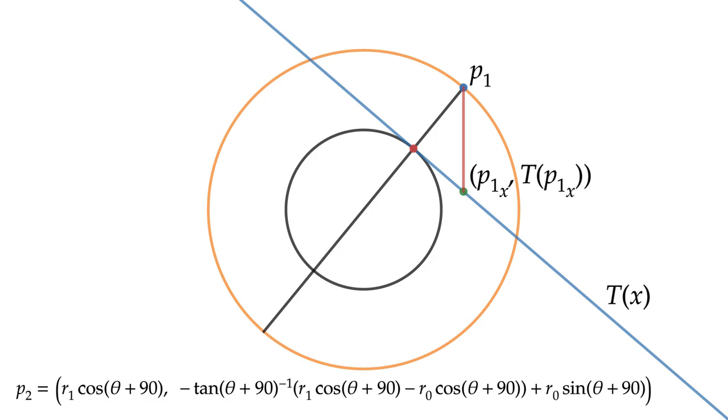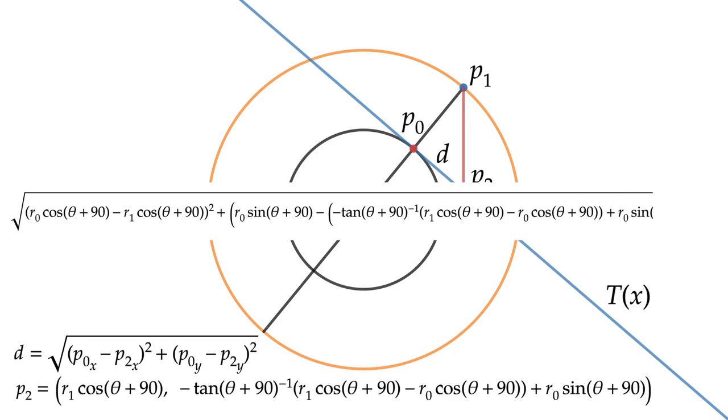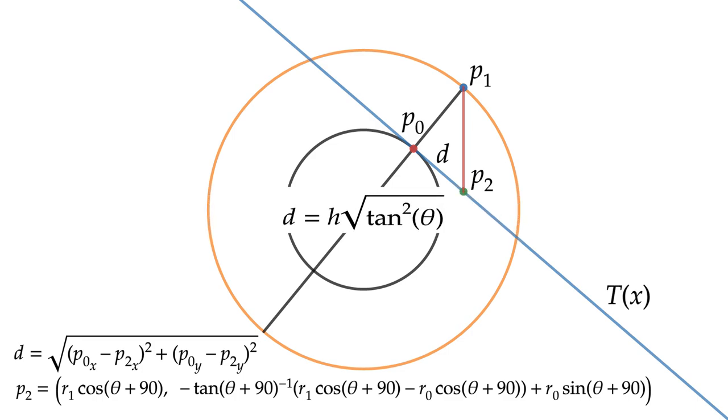Solving for P1 x gives us P2 equals R1 cosine theta plus 90, T of R1 cosine theta plus 90. Expanding T of x, P2 equals R1 cosine theta plus 90, negative tan theta plus R1 cosine theta plus 90 to the negative 1 times R1 cosine theta plus 90 minus R0 cosine theta plus 90 plus R0 sine theta plus 90. To then find the distance of the shadow D, we need to find the distance between P0 and P2. D equals square root P0 x minus P2 x squared plus P0 y minus P2 y squared. Substituting for P0 and P2 gives us square root R0 cosine theta plus 90 minus R1 cosine theta plus 90 squared plus R0 sine theta plus 90 minus negative tan theta plus 90 to the negative 1 times R1 cosine theta plus 90 minus R0 cosine theta plus 90 plus R0 sine theta plus 90 squared. Which thankfully all simplifies down to D equals H square root tan squared theta or even better, H absolute value of tan theta.